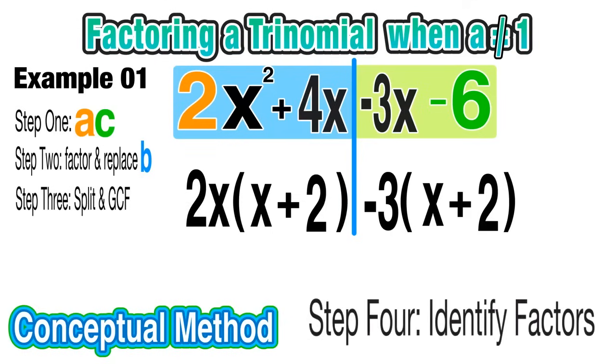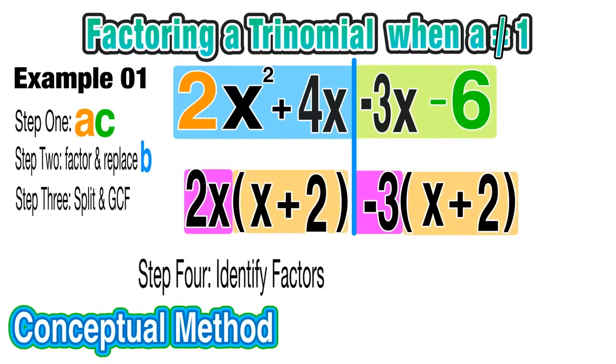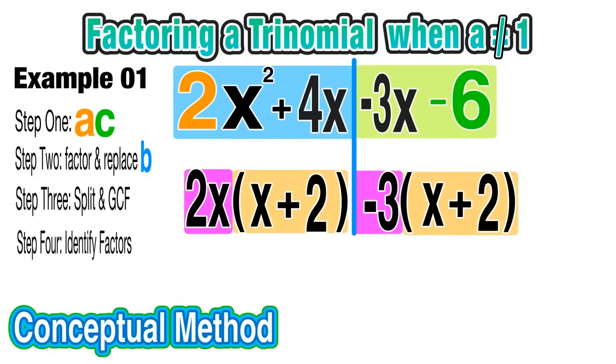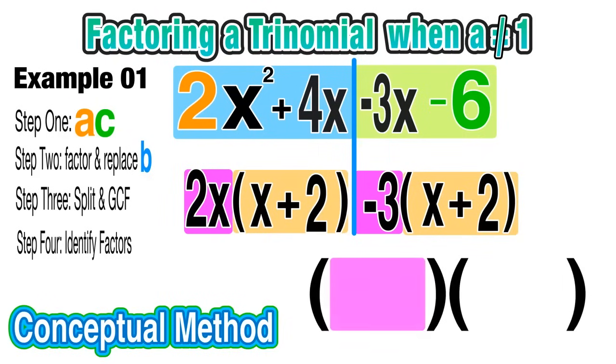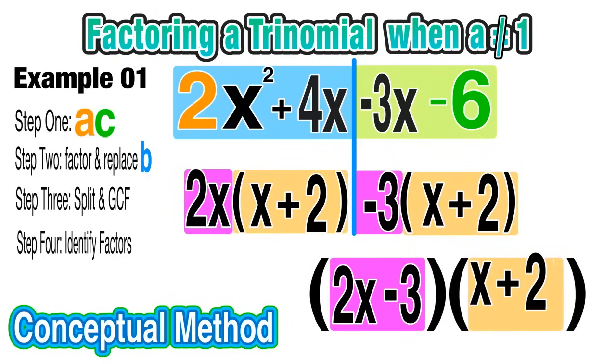Okay, so we're at the finish line here. The final step is to identify the factors. Notice that inside parentheses on both sides I have an (x+2) term, so that's going to be one of our factors. And then outside I have a 2x and a -3. Now if you use the distributive method of multiplying binomials, this should look familiar. We can rewrite this in a different way, and that is as two factors: one as (2x-3) and the other as (x+2).